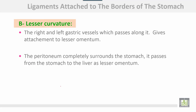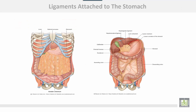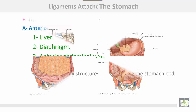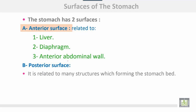At the lesser curvature, the right and left gastric vessels pass along it and give attachment to the lesser omentum. The peritoneum completely surrounds the stomach. It passes from the stomach to the liver as the lesser omentum. This is the stomach, this is the lesser omentum, and this is the greater omentum to the greater curvature.